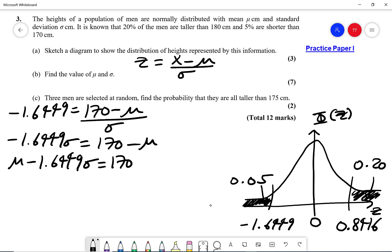Now we're going to do the same on the other side. So I'm going to say the following: 0.8416 that corresponds to an x value of 180. So it's 180 minus mu all divided by sigma. So I get 0.8416 sigma is 180 minus mu. So I get mu plus 0.8416 sigma equals to 180. So now I've got a pair of simultaneous equations.